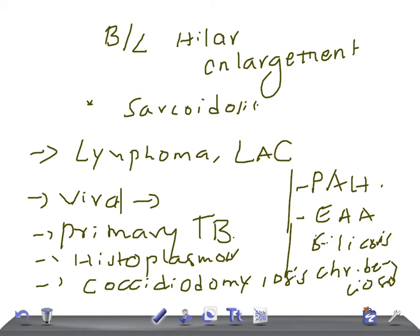So these are the causes for bilateral hilar enlargement. Just remember them, and if you see a chest x-ray with bilateral hilar enlargement, the first thing that should strike your mind is sarcoidosis. Thank you so much for watching this video — take care!